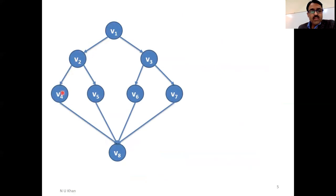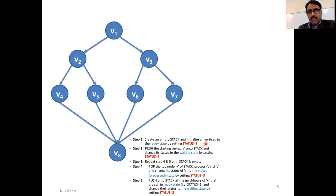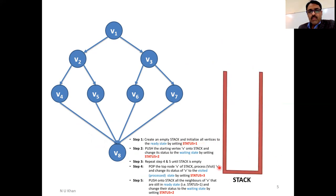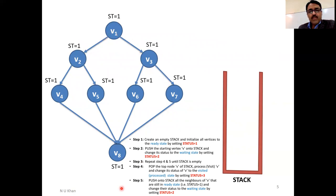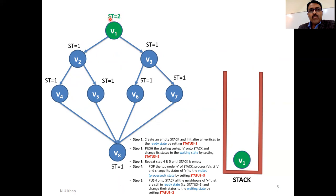Now let's walk through an example. This is a graph with eight vertices. Step one: create an empty stack and set all flag values to one — all eight vertices are ready to visit. Let us assume the starting vertex is V1. We push V1 onto the stack and change its status to two, meaning it is now waiting in the stack to be visited.